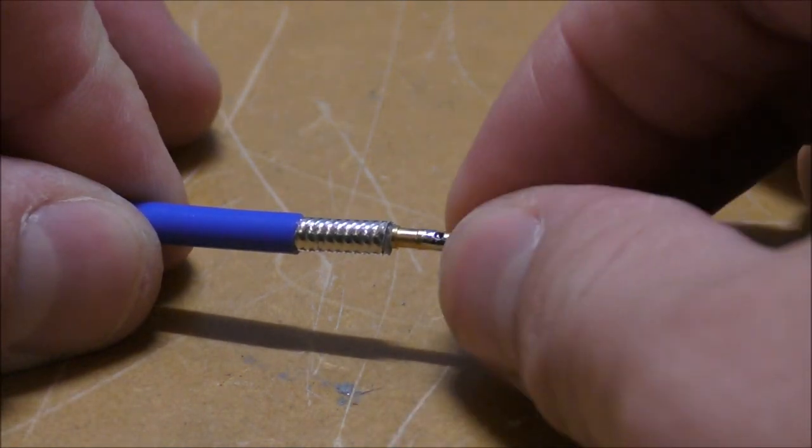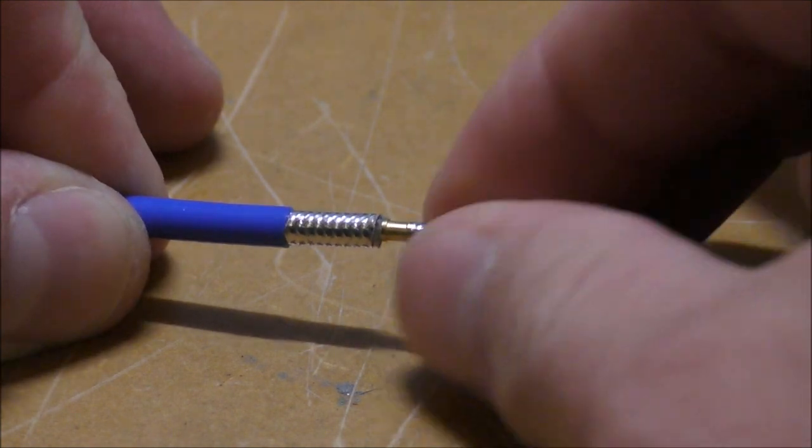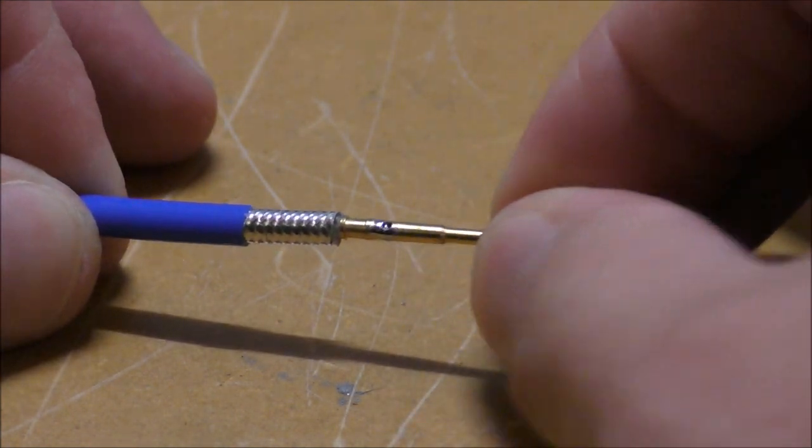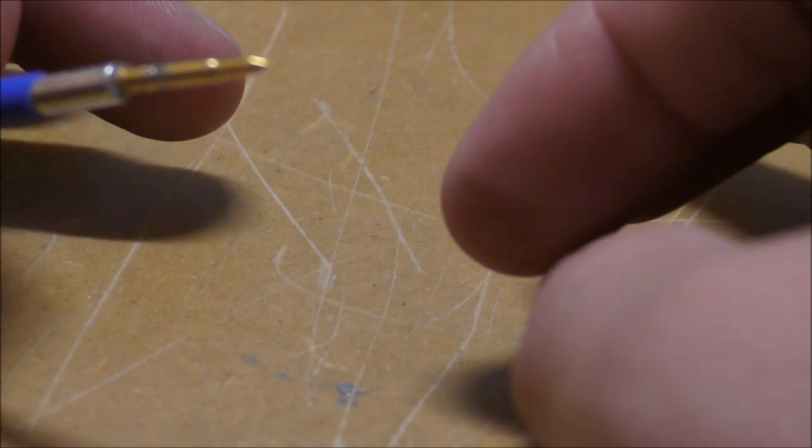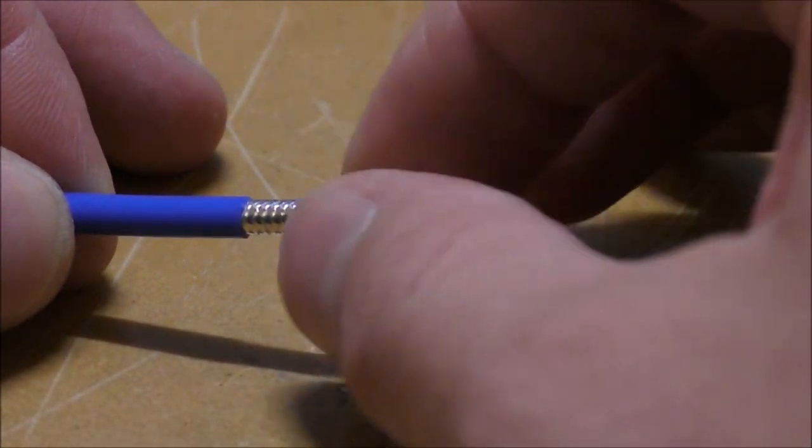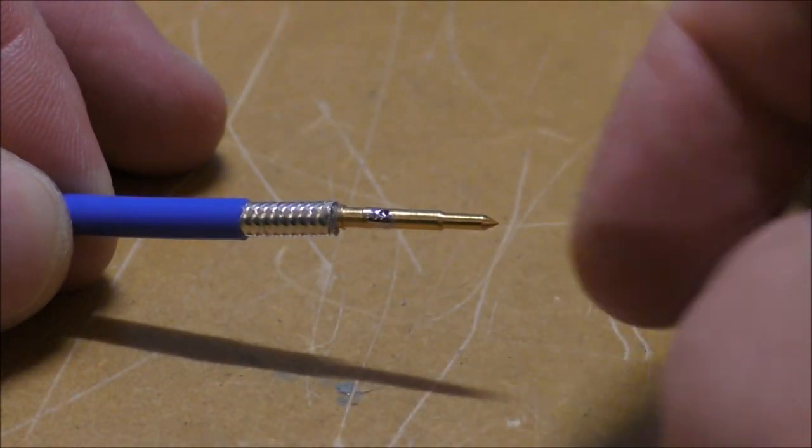Once it's cooled down, just check your connection, make sure that you can't pull the pin off physically. This looks quite good. And again, just check with a meter and make sure that the center conductor is not touching the outer.